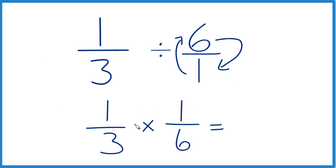With fractions, it's pretty easy to multiply. Multiply the numerators: one times one, that's one. And then the denominators: three times six, that's 18.